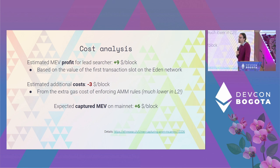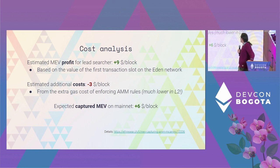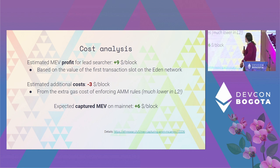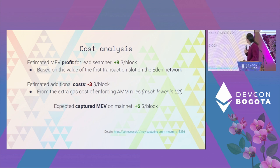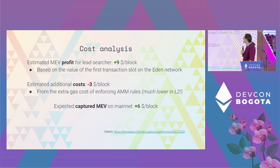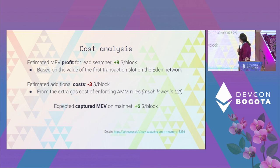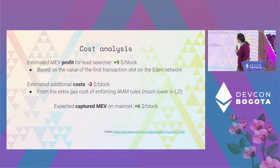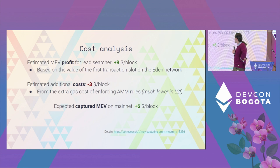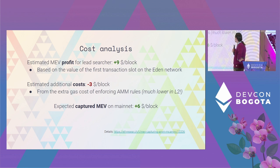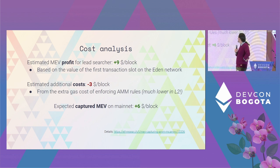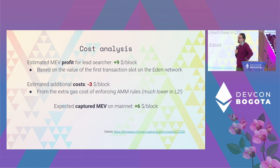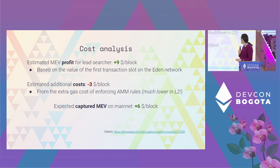So let's analyze some costs. The profits are estimated to be nine dollars per block. The EDEN network, which works in a fairly similar way — it also auctions the right to the first slot in a block — gives comparable profit to our structure. The costs are estimated to be three dollars per block, which is basically the extra gas cost to enforce the rules we just described. Note that this is based on a 40 Gwei gas price, but it would be much lower on L2. So already, with this simple scheme, we would have a theoretically captured MEV of six dollars per block.